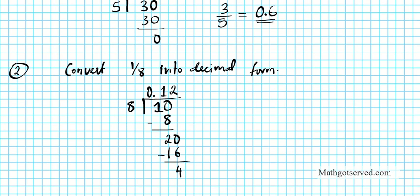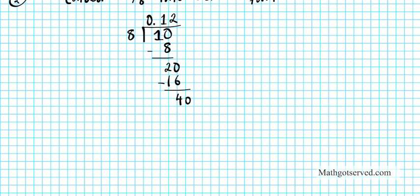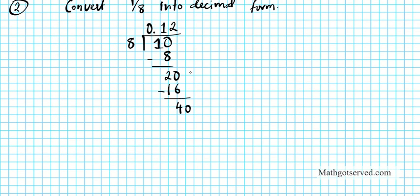And then you repeat the same process. Once you put a 0 here. You ask yourself how many times does 8 go into 40? Do your multiplication table. You know that 8 times 5 is 40. So we have 5. 5 times 8 is 40. When we subtract, you have 0. When you have 0, you're done. So 1 over 8 in decimal form is 0.125.